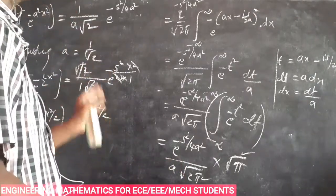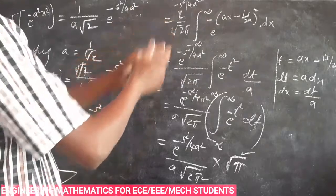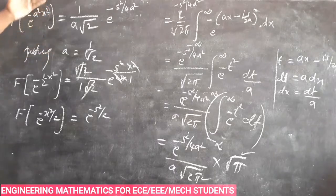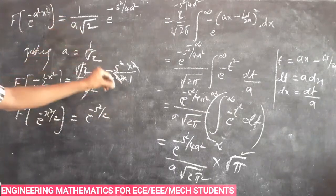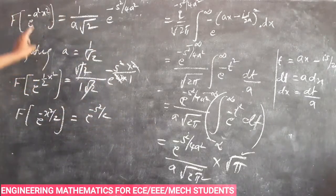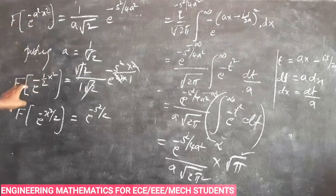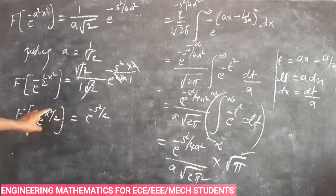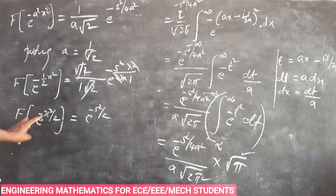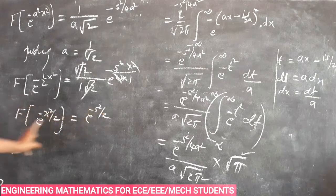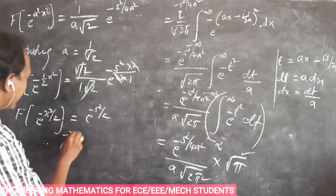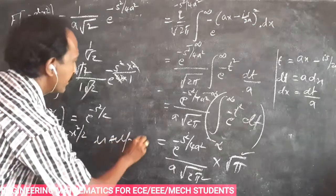Prove that e power minus x squared by 2 is self-reciprocal. We showed Fourier transform of e power minus x squared by 2 equals e power minus x squared by 2. Since Fourier transform of small f of x equals small f of x, therefore e power minus x squared by 2 is self-reciprocal.